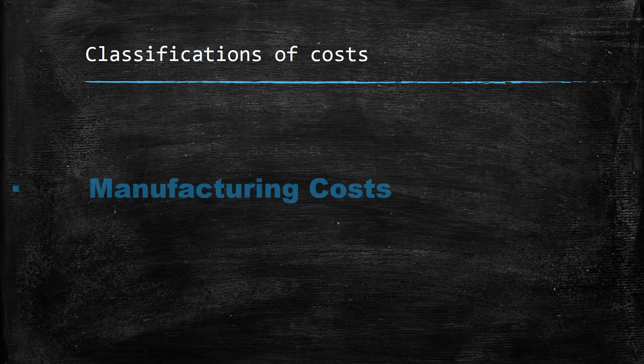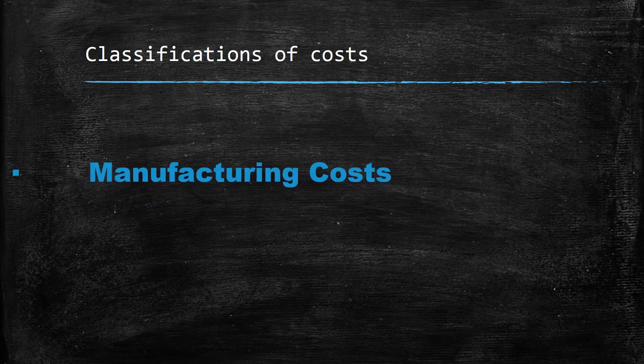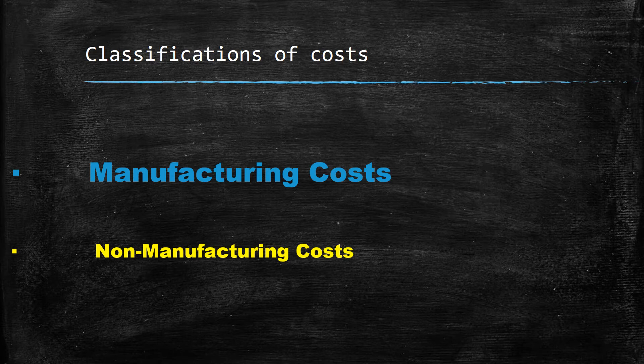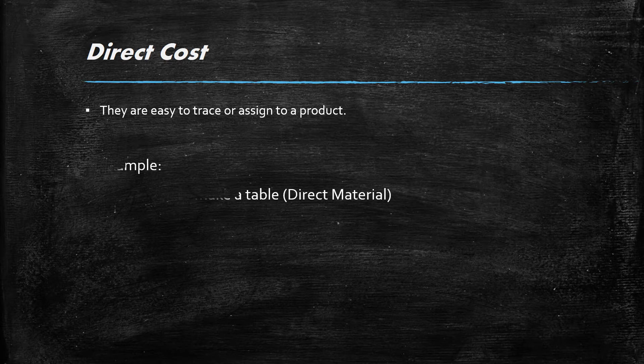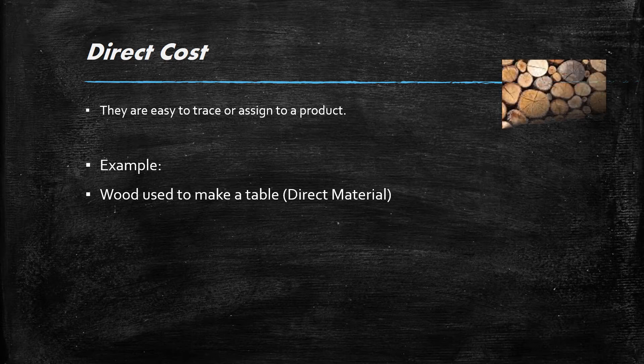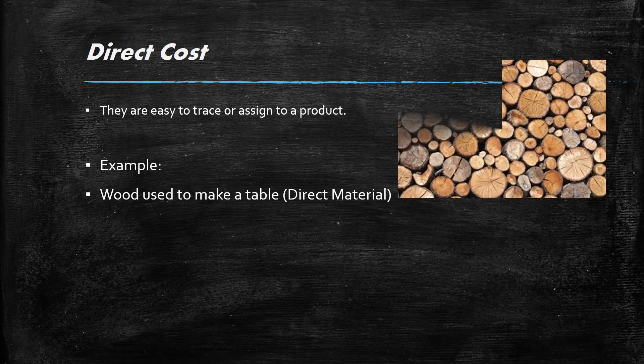Today we're going to be looking at classifications of costs — your manufacturing costs and your non-manufacturing costs, with the focus on manufacturing costs. Your first type of manufacturing cost is direct material, which is a cost that can be easily assigned or traceable to a product. For example, the wood used to make a table represents your direct material.